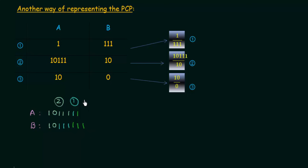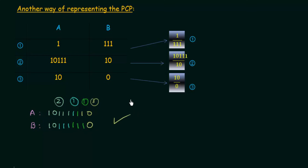After using domino 1 twice, the strings match up to that point, but we have an extra 1 in the denominator. Using domino 3 (10 over 0) gives us a 1 in the numerator to cancel it out. Now the top and the bottom strings are the same. We used domino 1 two times, which confirms you can use any domino any number of times. We have found a solution to this PCP.